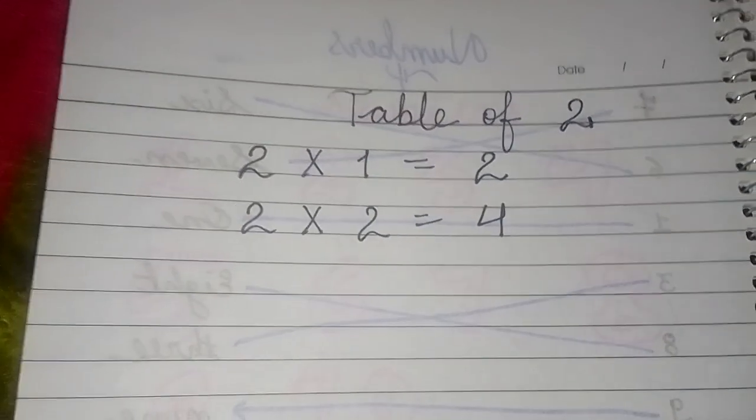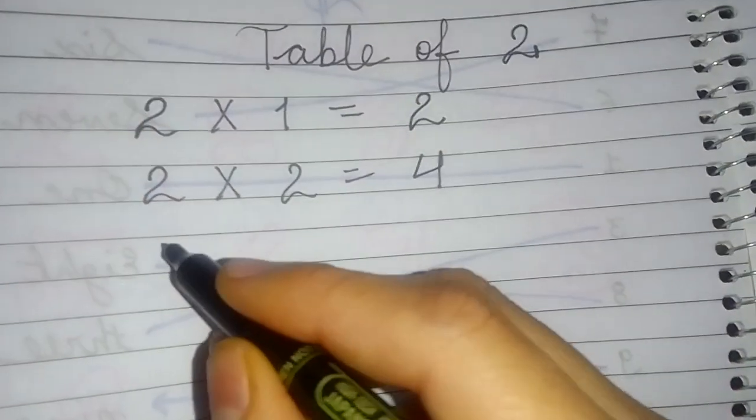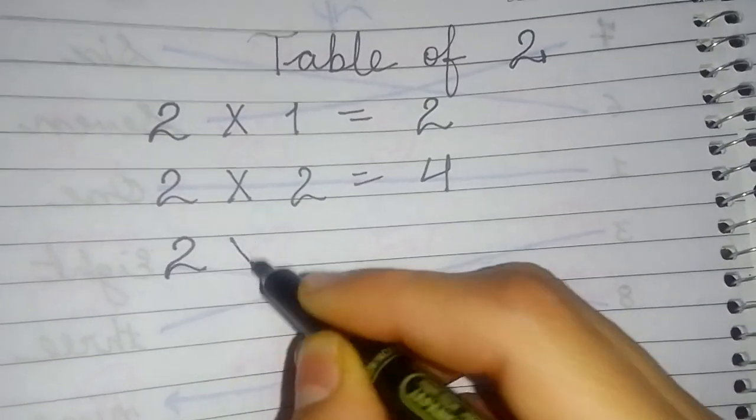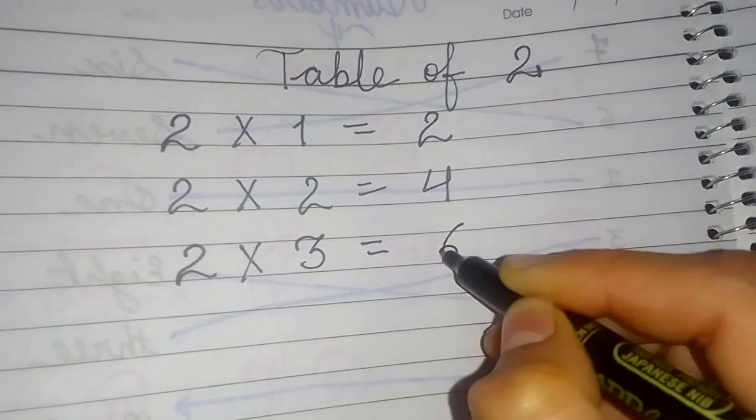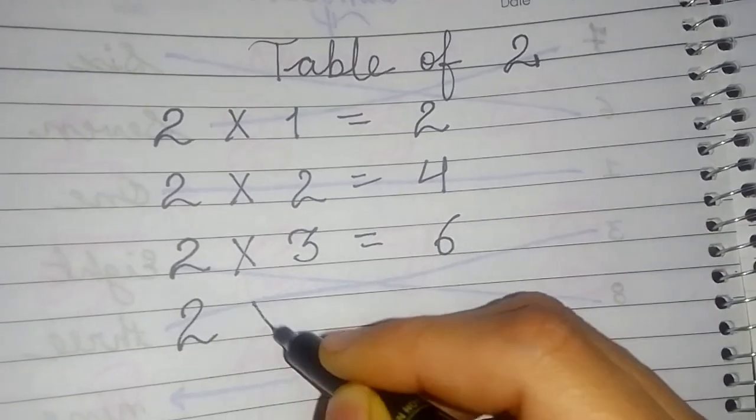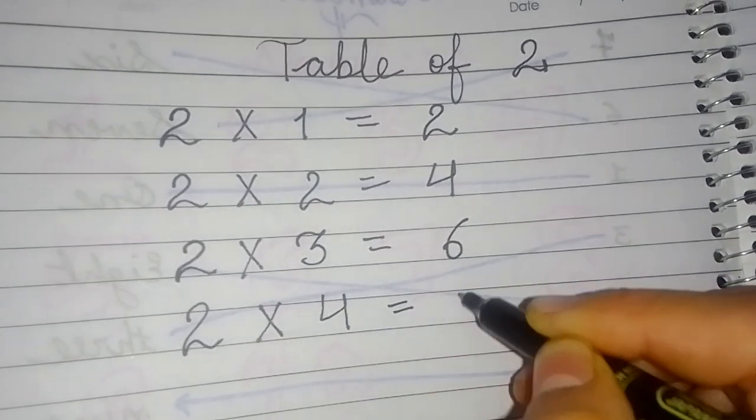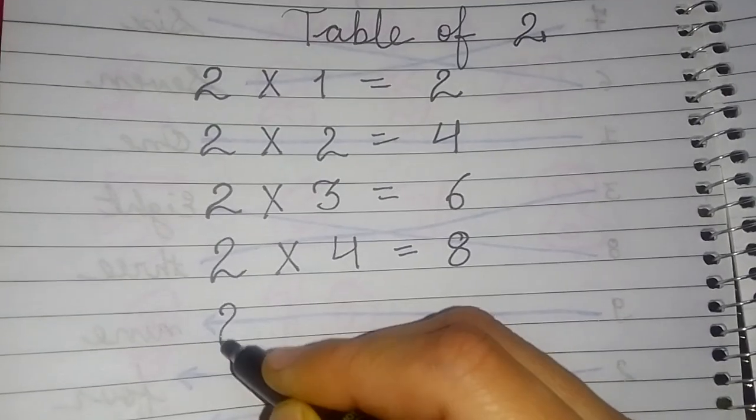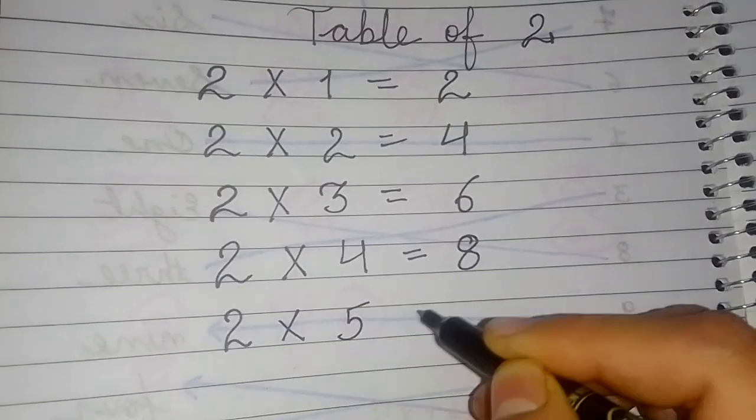And at last I will tell you the trick to write the table. 2 threes are 6. 2 fours are 8. 2 fives are 10.